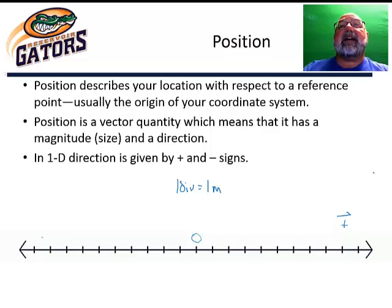Let's say that we have an object that has a position of positive two meters. So where would that be? Well, I start counting at my origin zero and positive would be to the right. So one meter, two meters. So my object is going to be right here at positive two meters.